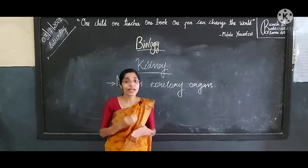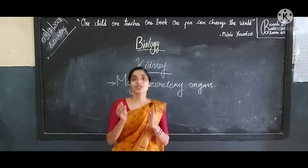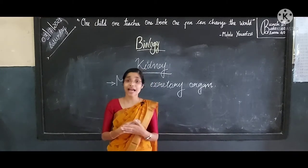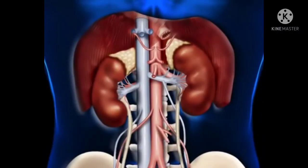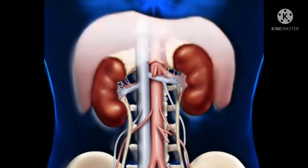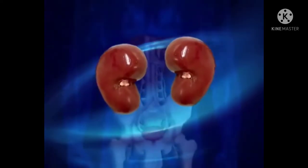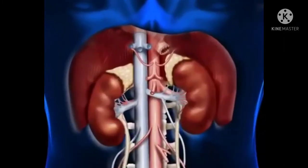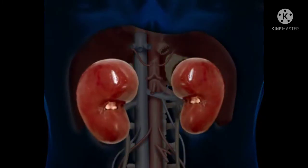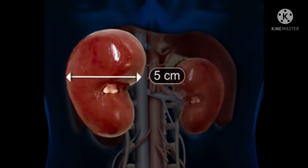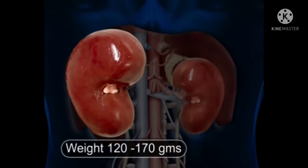Now let's learn more about the position and shape of this kidney. So are you all ready to watch a video? The kidneys are placed against the back wall of the abdominal cavity just below the diaphragm, one on either side of the vertebral column. The kidneys are a pair of bean-shaped organs that are part of the urinary system, dark red, slightly flattened, each about 10 cm long.